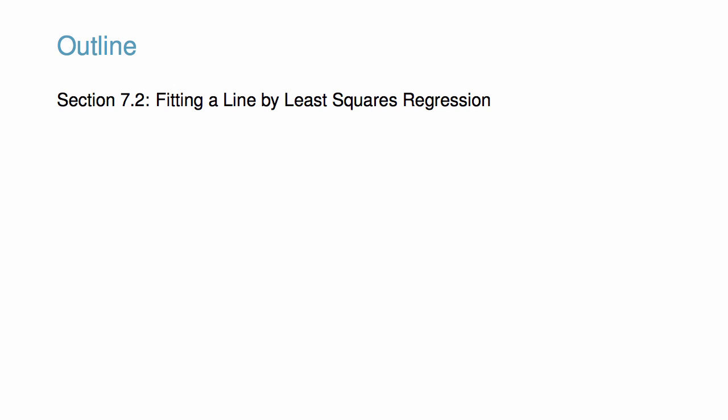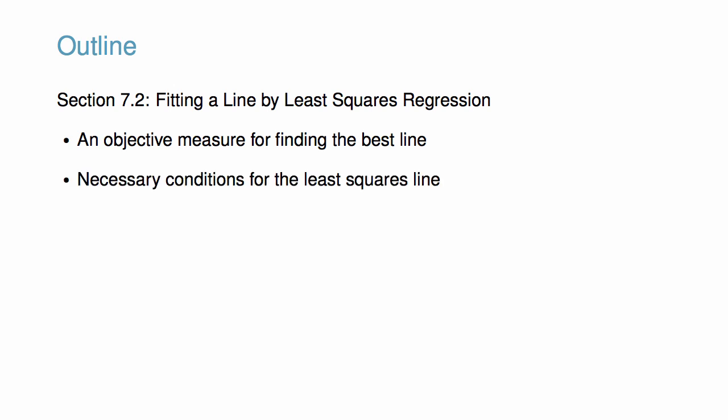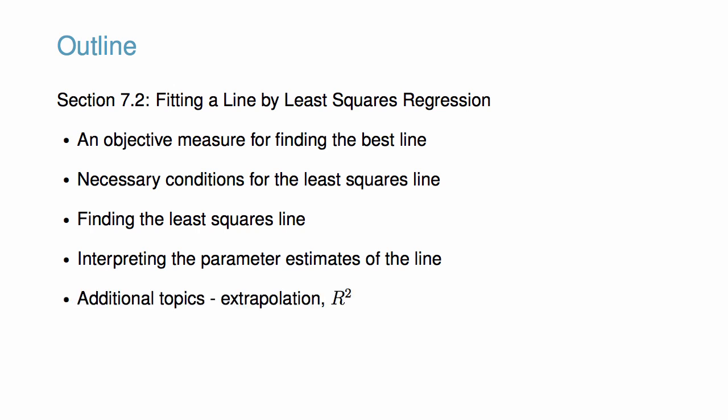We will discover that least squares regression is an intuitive and objective measure for finding the best line. We will discuss necessary conditions for the least squares line to be appropriate and methods for finding the least squares line. Then we will get some practice interpreting the parameter estimates of the line. In additional topics, we will see that extrapolation is dangerous and we will practice using R² to describe the strength of a fit.